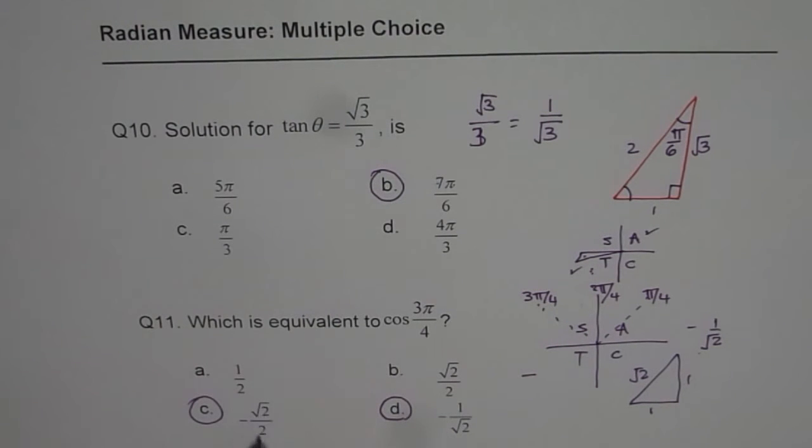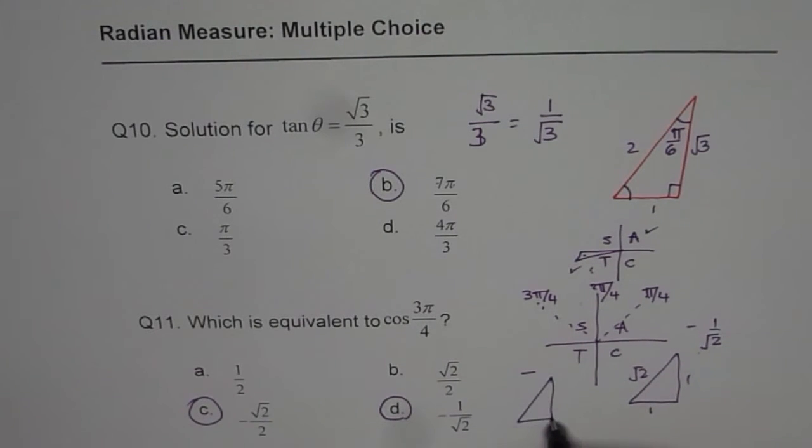That is also 1 over square root 2. When we write square root 2 over 2, that is also square root 2. If you multiply all of them by square root 2, what do you get? Let me draw another triangle to write that.